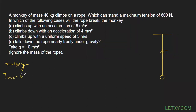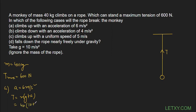Part A: the monkey of mass 40 kg is climbing up with an acceleration of 6 m/s². The tension formula is T = m(g + a), and g = 10 is given. So T = 40 × (10 + 6) = 40 × 16 = 640 newton. Since T = 640 N is greater than T_max = 600 N, therefore the rope will break.